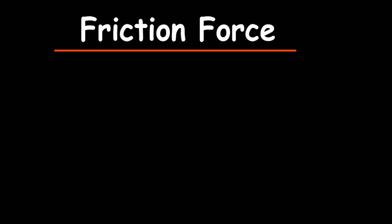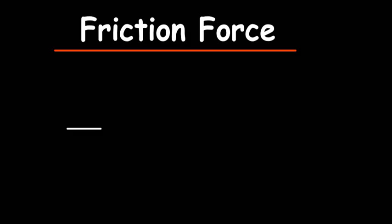Let's say you have got an object. This object is moving in this direction. So if there is a force, let's say a force of maybe 20 N, that is pushing this object. The friction force is the force that is present between the surface and the object, so that force will always oppose the motion.